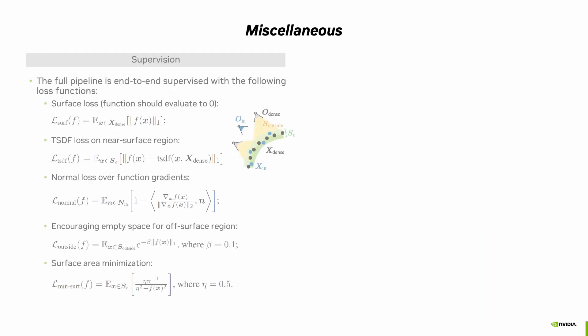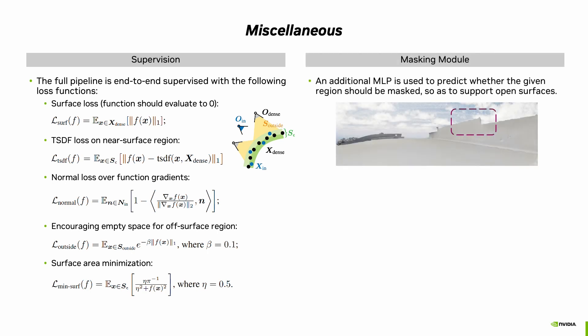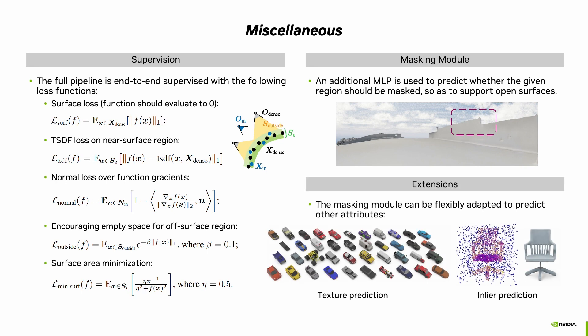The above full pipeline including the linear solve is fully differentiable and supervised in an end-to-end manner, using the criteria that combines on-surface loss, near-surface TSDF loss, normal loss, empty space loss, as well as surface area minimization loss. In order to support open surfaces as often observed in outdoor scenarios, an additional MLP is used to predict whether the given region should be masked out. Such a MLP-based masking module can be flexibly adapted to support other applications by predicting other attributes, such as textures and outlier probabilities for outlier removal.